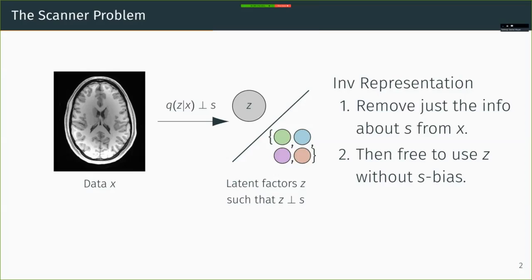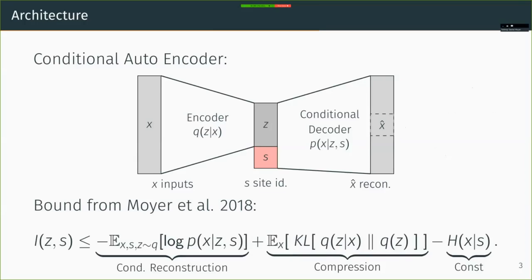In order to do this, we used a conditional autoencoder and added a bound on the site information, the information between z and the site variable.